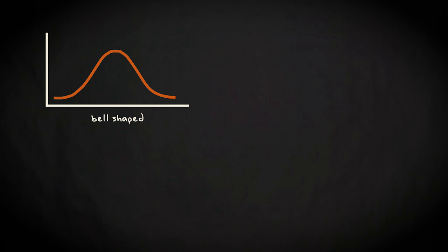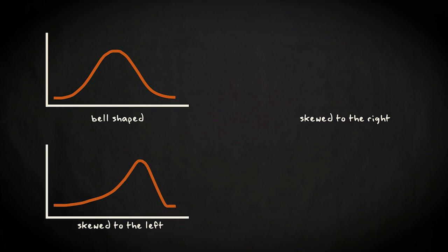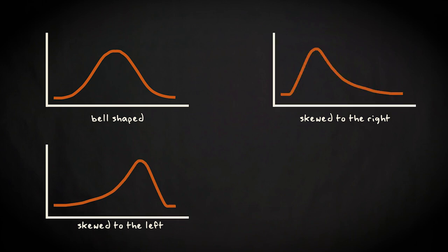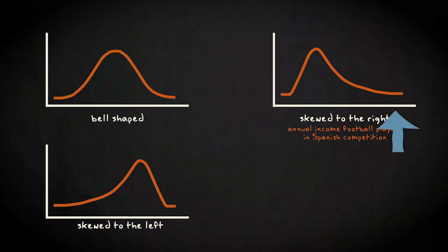But not all histograms have this shape. A histogram can also be skewed to the left or to the right. A skewed histogram is not symmetric because one side of the distribution stretches out further than the other. This histogram is skewed to the left, and this one is skewed to the right. A variable that might have a right-skewed histogram is the annual income of football players in the Spanish competition. There won't be many players with a very low income compared to the average, but there will be some players who earn much more money than the majority. For that reason, there is a longer right tail.